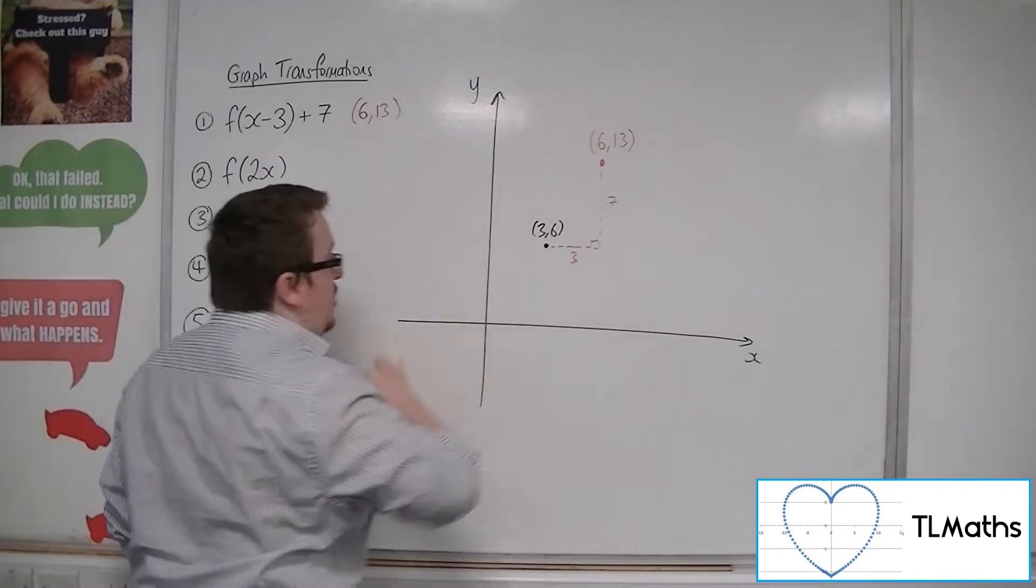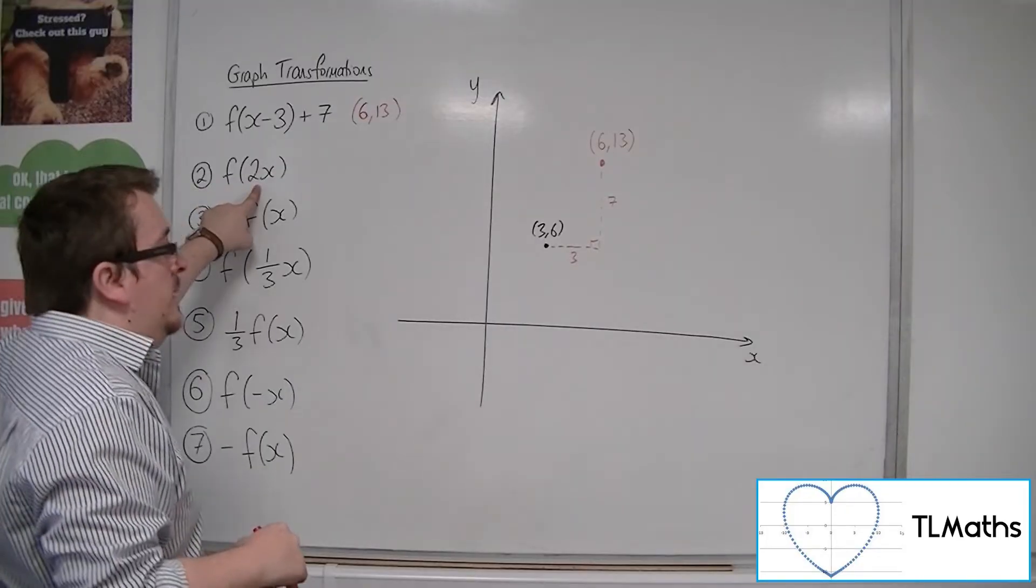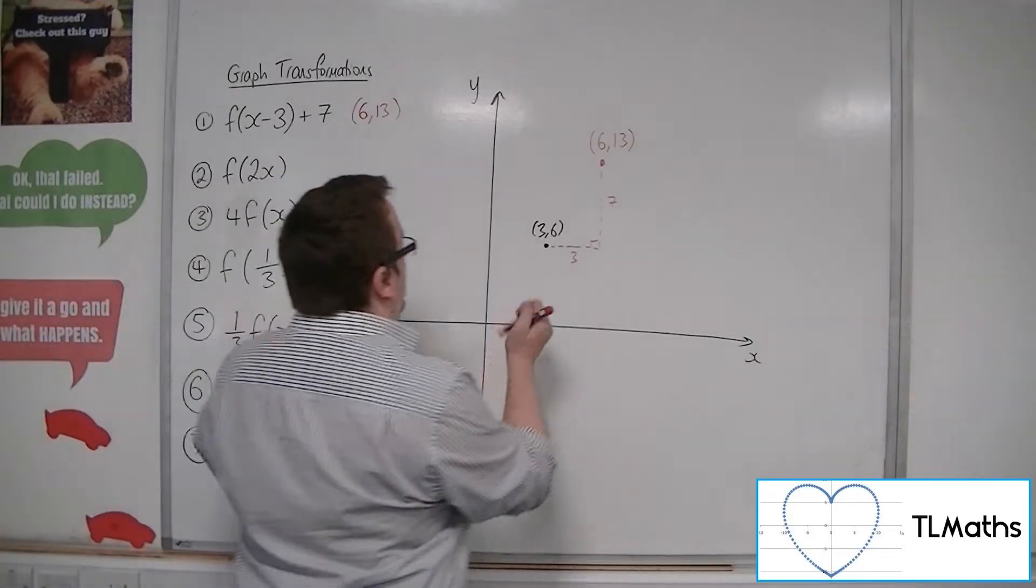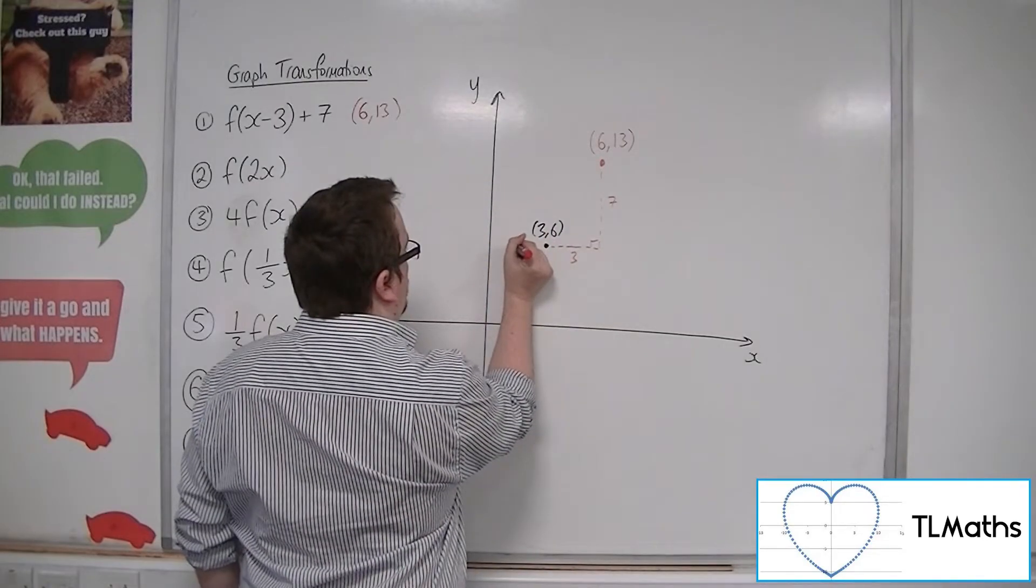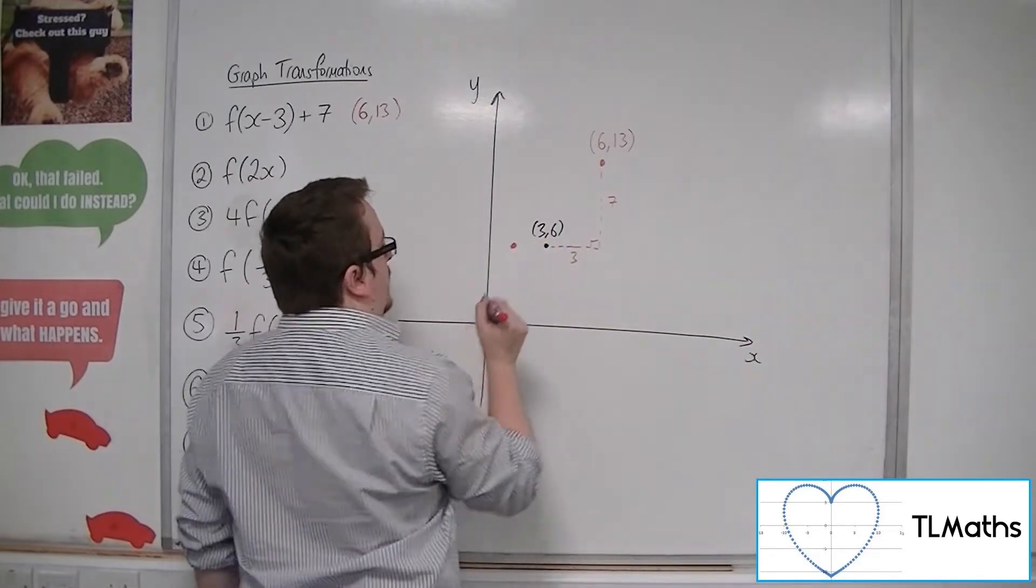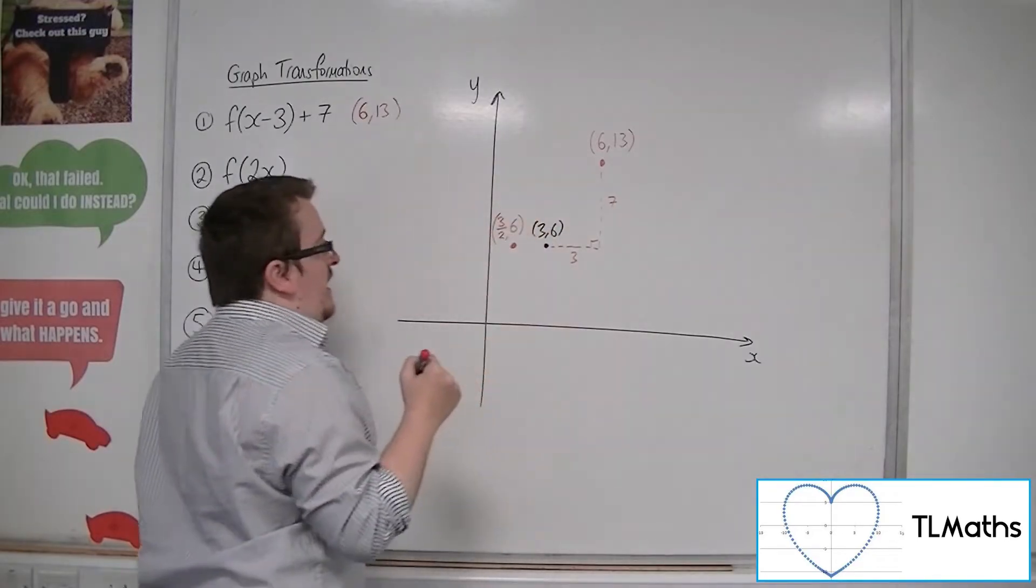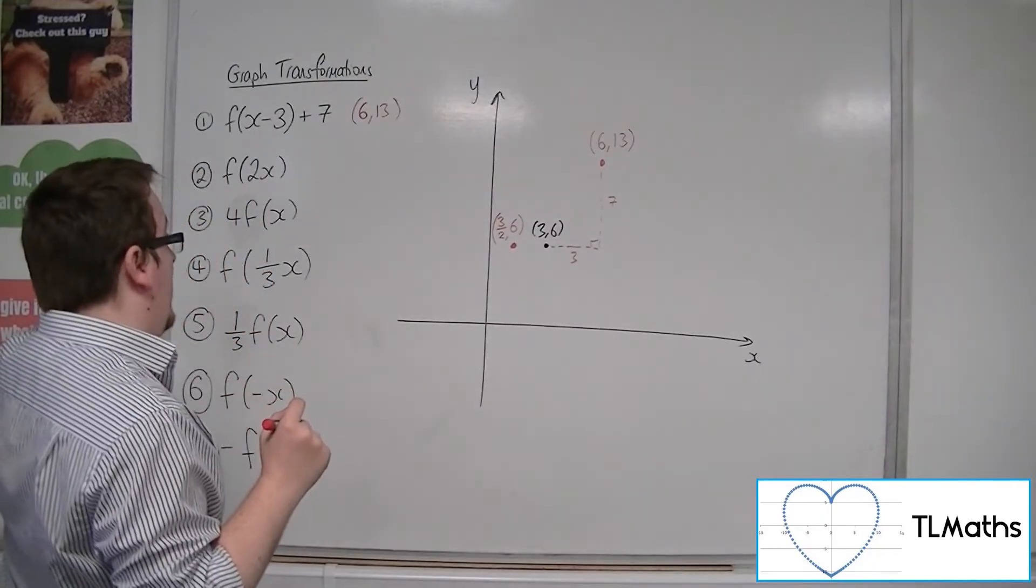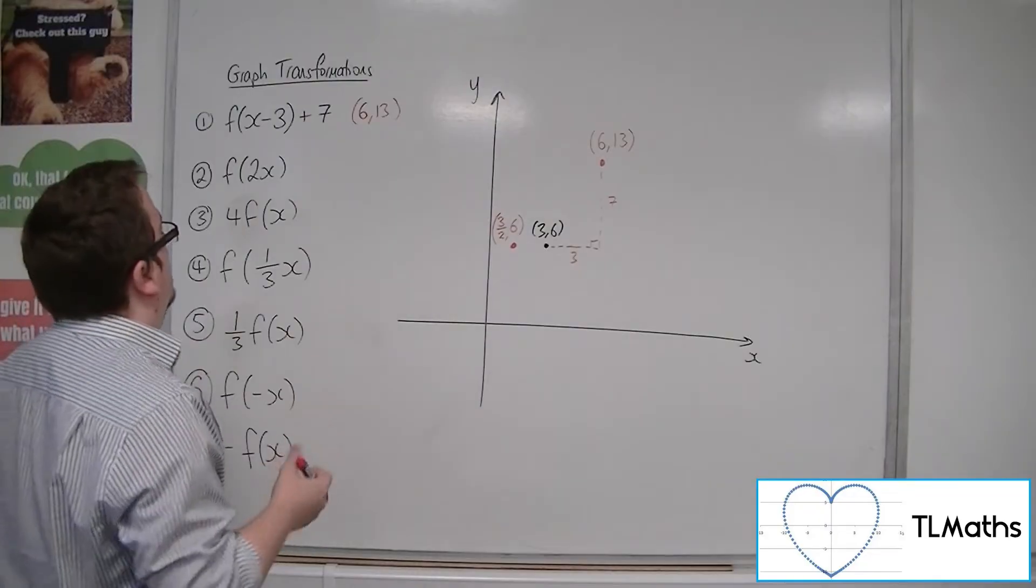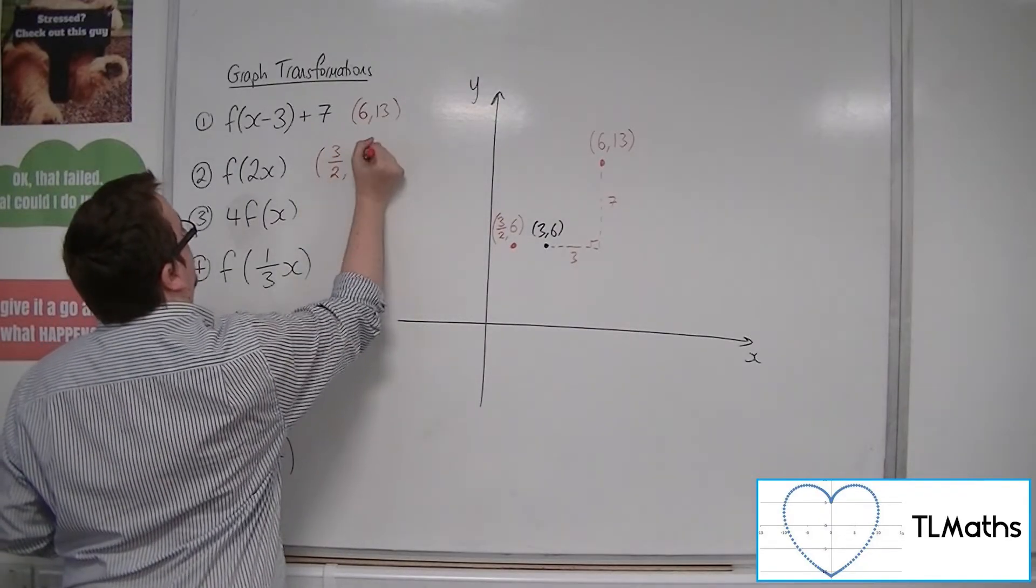This point, however, is not on the y-axis. So if this is a stretch factor of 1/2 parallel to the x-axis, that's going to stretch it inwards. And so our new point would appear here. So that would be 3/2, 6. The y coordinate would stay where it is, but the x coordinate would have shifted and be halved. So that's 3/2, 6.